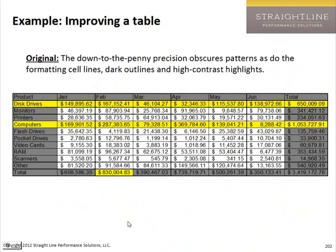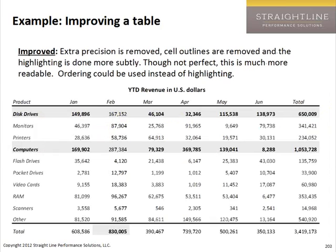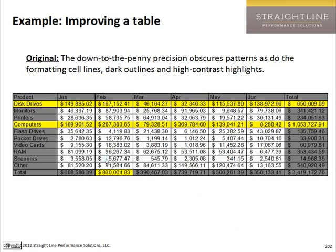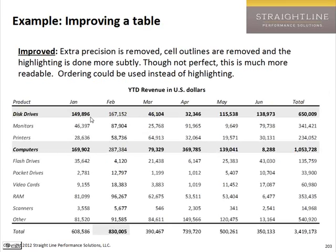Here's an example of a table that was improved. The original had down-to-the-penny precision. We removed that, got rid of a lot of the dark outlines, and made it a much more readable font. Here's what we came up with: highlights with some grayscale and bold, lighter font for non-highlighted items, no grid lines, and reduced precision. We could have made it in thousands for even more readability, although we had some values less than that.